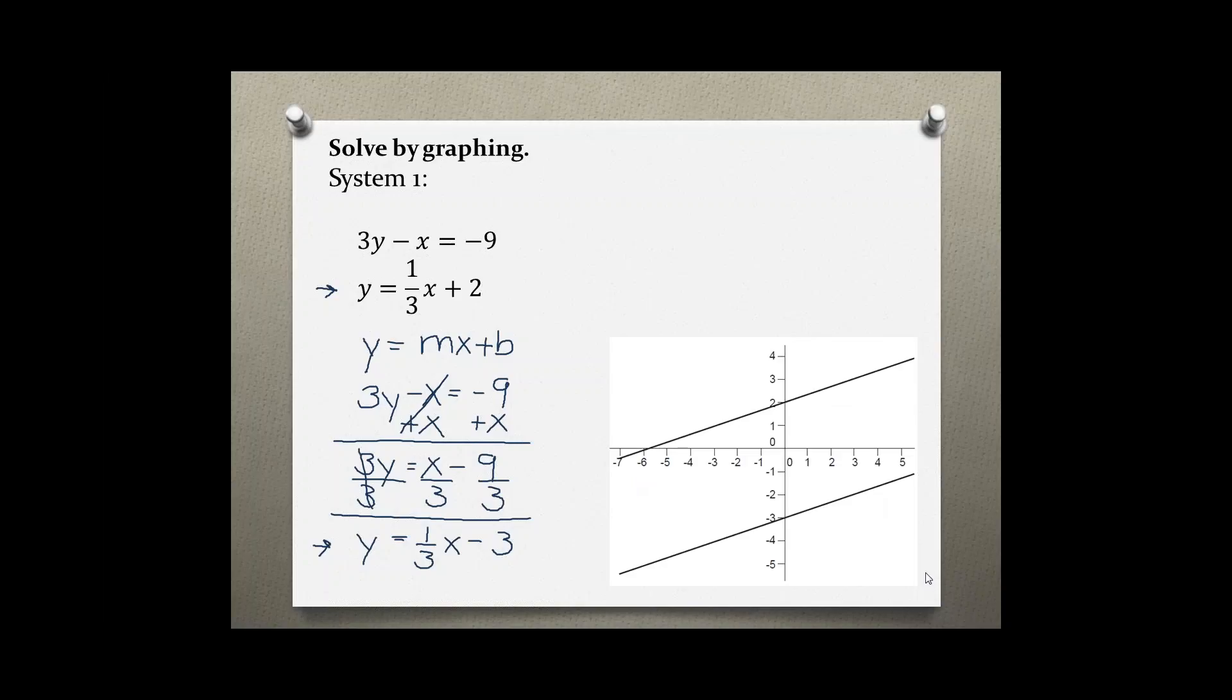So again, here's our graph. Our first equation is this bottom line, our second equation is the top line, and they are parallel so they never intersect. There is no solution to this system.